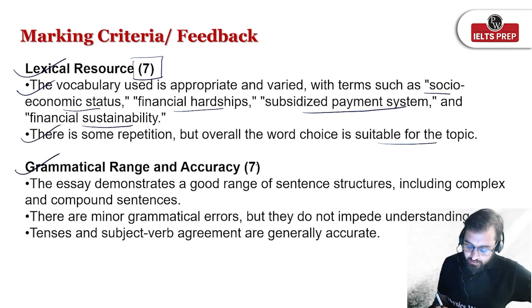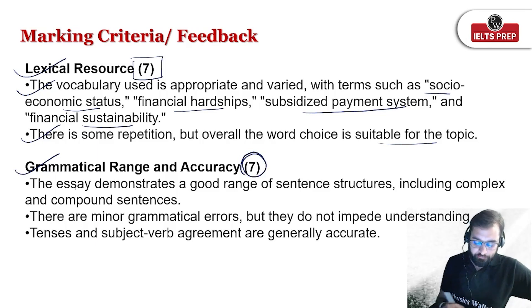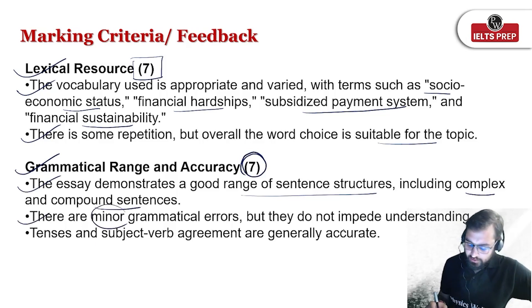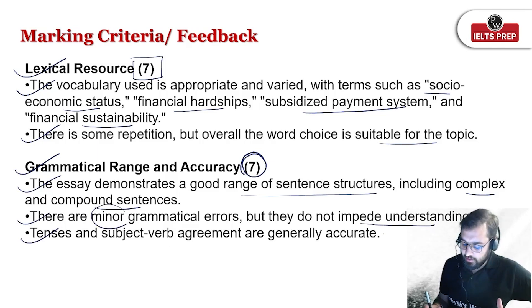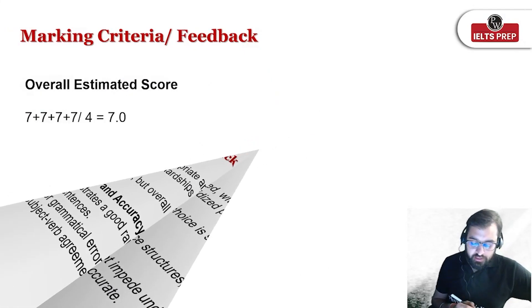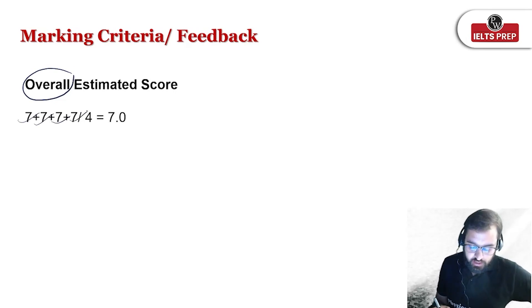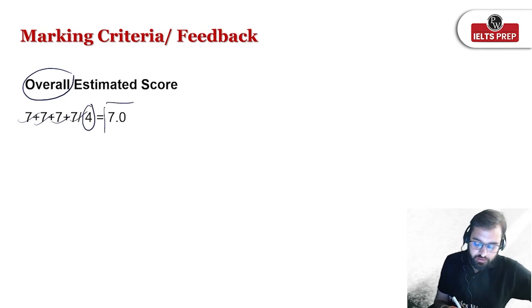Last but not least, grammatical range and accuracy — why it could be 7: because the essay demonstrates a good range of sentence structures, including complex and compound sentences. There are minor grammatical errors but they do not impede understanding. Tenses and subject-verb agreement are also generally accurate. So, if I look at the overall score, the estimated score of this writer should be 7, 7, 7, 7 from each parameter, and dividing by 4 to calculate the average score, it should be 7.